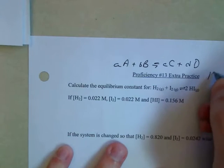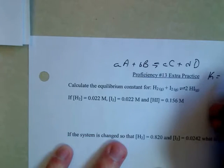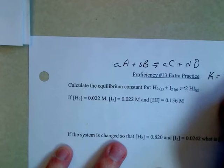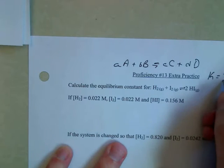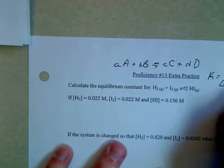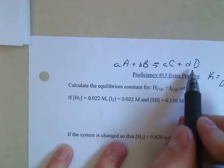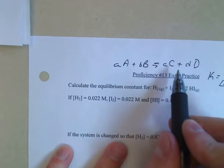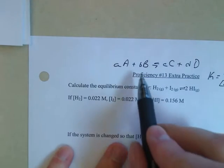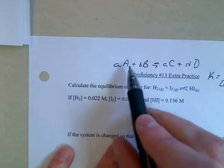Your K, your constant, is always going to equal the concentration of C to the power of its coefficient times the concentration of D to the power of its coefficient, divided by the concentration of A to its coefficient times the concentration of B times its coefficient. So it's basically the products to the power of their coefficient divided by the concentration of the reactants to their coefficient.